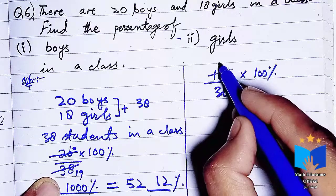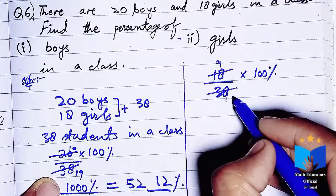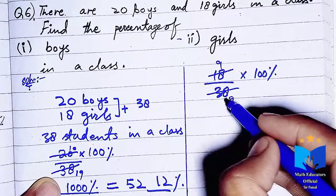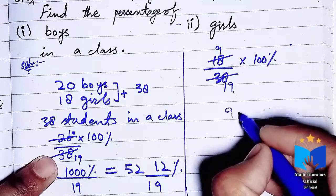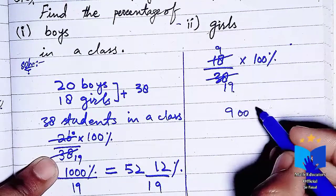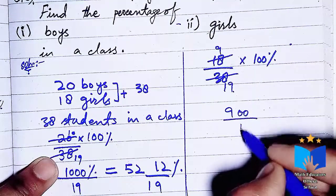We simplify this: 2 times 9 is 18 and 2 times 19 is 38, so we cancel the 2s. This gives us 9 into 100, which equals 900 upon 19.